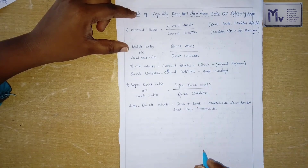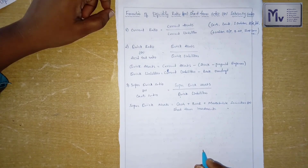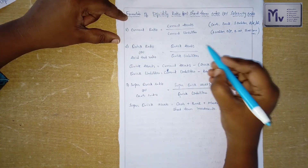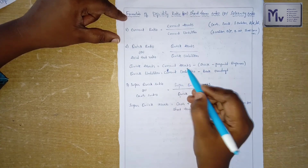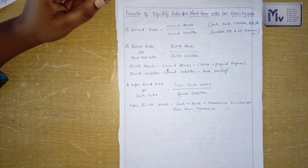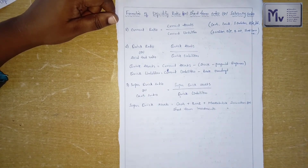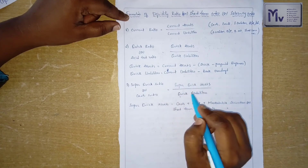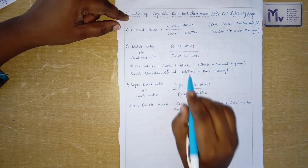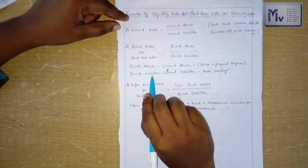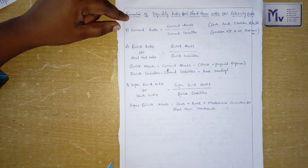Next, coming to the quick ratio — also called the acid test ratio. The formula is: quick assets divided by quick liabilities. To calculate quick assets: current assets minus stock minus prepaid expenses. We remove inventories and prepaid expenses from current assets to get quick assets. For quick liabilities: current liabilities minus bank overdraft gives us the quick liability. Substituting in the formula gives us the quick ratio answer.